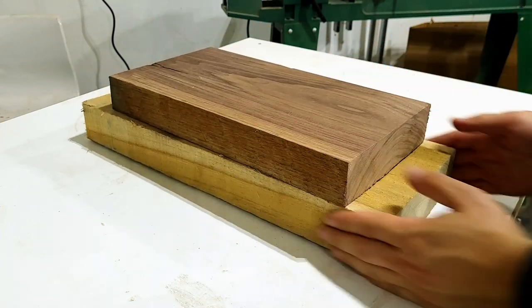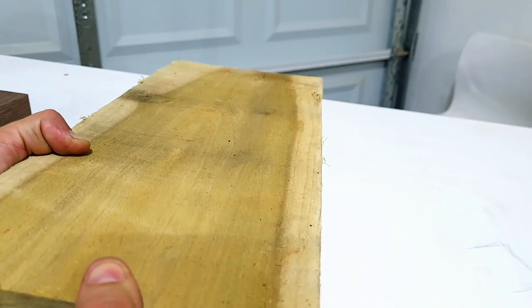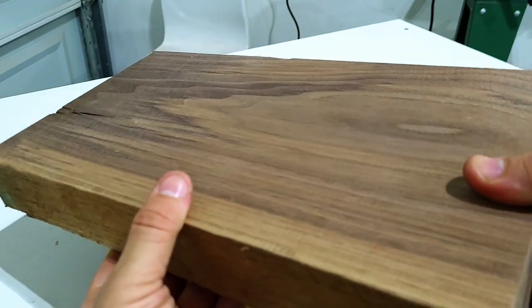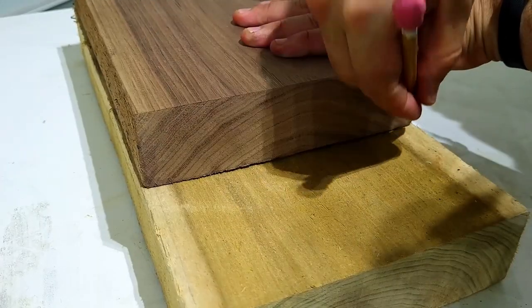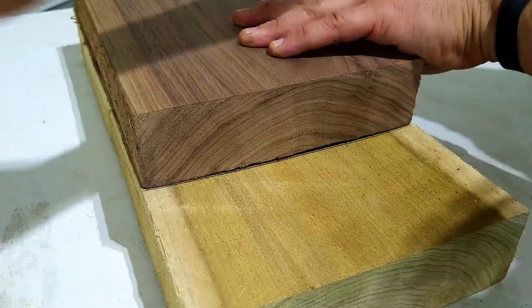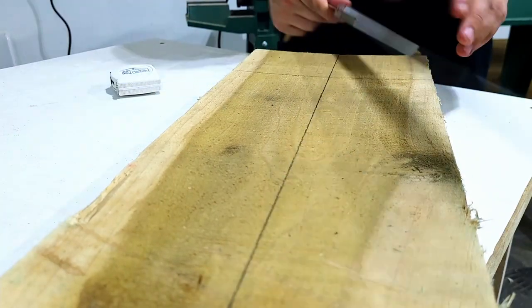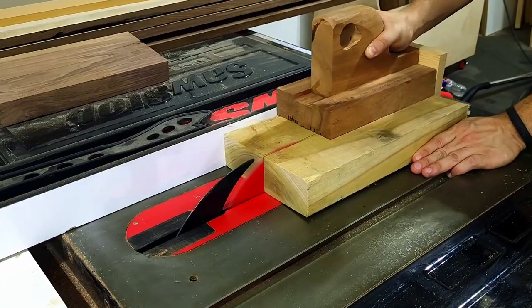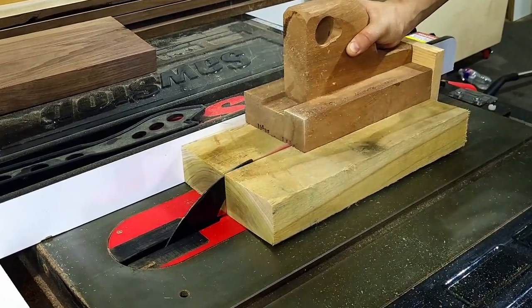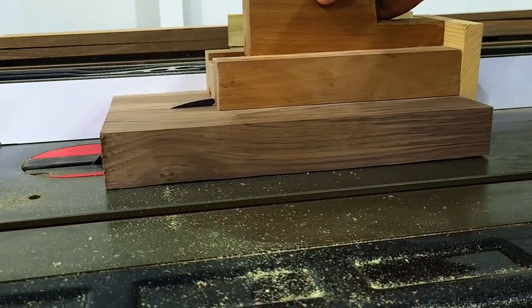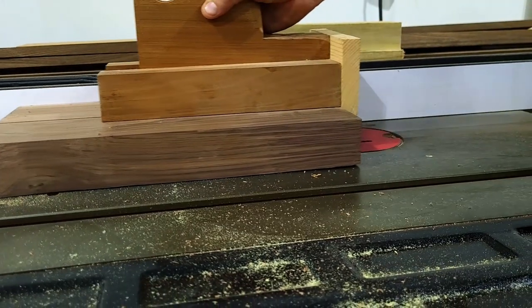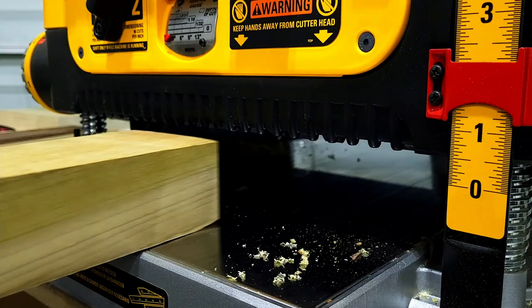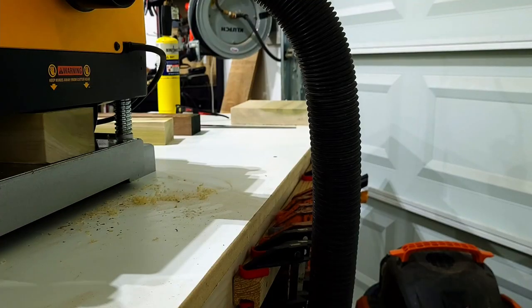Next, it was time to start working on the leg portion of the nightstand. I again used poplar, but I also threw in some walnut to act as a middle support and contrast wood. Like before, I marked everything to the dimensions I wanted them to be and then cut everything down to length on the table saw. Afterwards, I ran everything through the planer so I had nice clean lumber to work with.